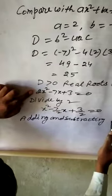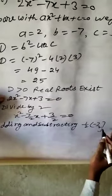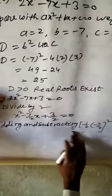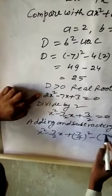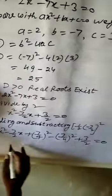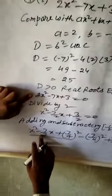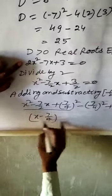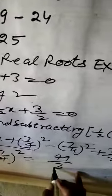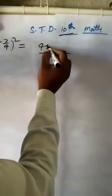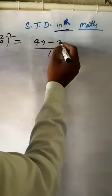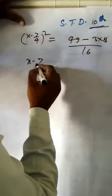Adding and subtracting the square of half the coefficient of X, that is 7 upon 4 whole squared: X square minus 7 upon 2 times X plus 7 upon 4 whole square minus 7 upon 4 whole square plus 3 upon 2 equal to 0. This gives X minus 7 upon 4 whole square equal to 49 upon 16 minus 3 upon 2.